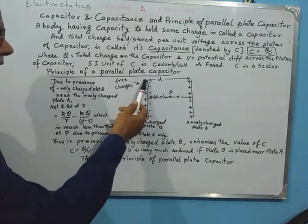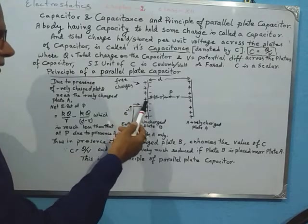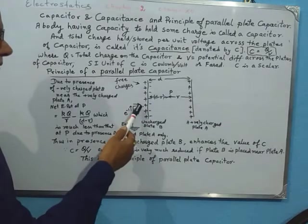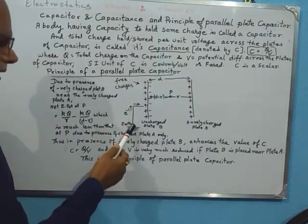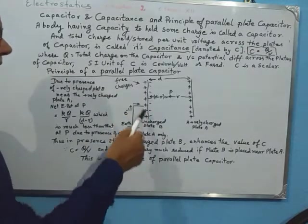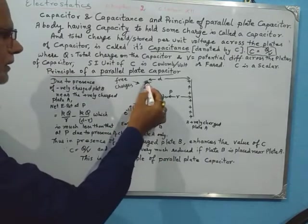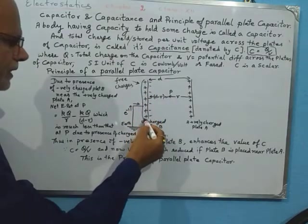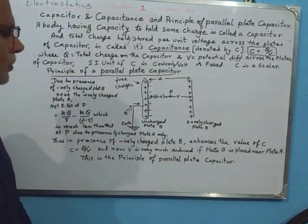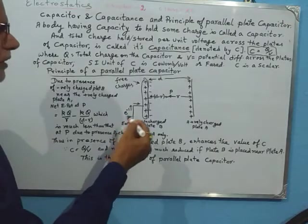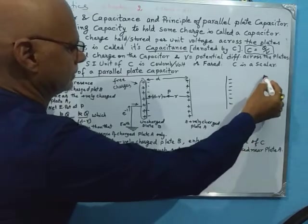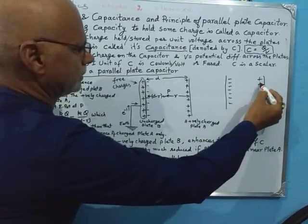If we then connect the surface of plate B to the earth, the free positive charges are neutralized due to the flow of electrons from earth to that point. The positive charge layer vanishes due to the flow of electrons from earth to the surface of plate B, and so it virtually becomes a negatively charged plate placed near the positively charged plate A.